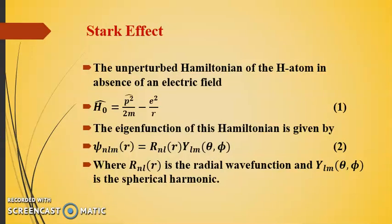Our purpose in this lecture is to calculate the energy shift due to the presence of the electric field. Let's begin with the unperturbed Hamiltonian of the hydrogen atom in the absence of an electric field: H₀ = p²/2m − e²/r. The eigenfunctions of this Hamiltonian are given by ψ_nlm(r) = R_nl(r) · Y_lm(θ,φ), where n, l, m are the good quantum numbers — n is the principal quantum number, l is the orbital angular momentum, m is the orbital magnetic quantum number, R_nl(r) is the radial wave function, and Y_lm(θ,φ) is the spherical harmonic.